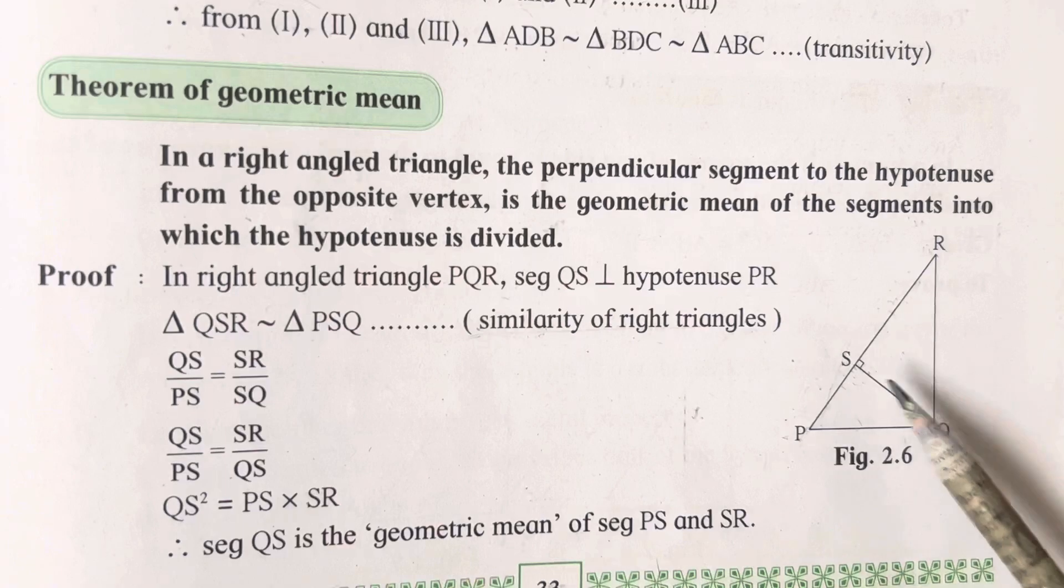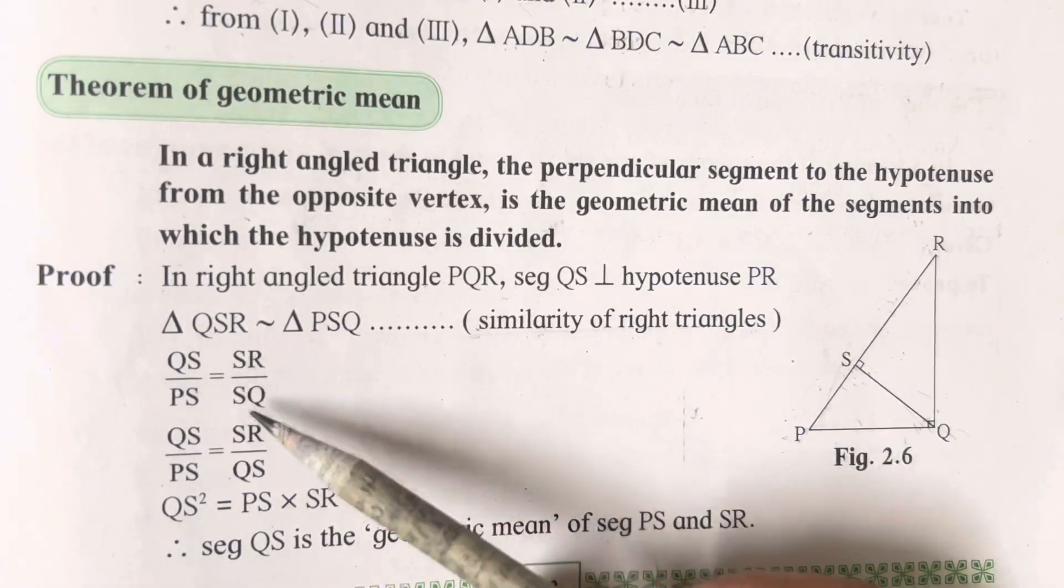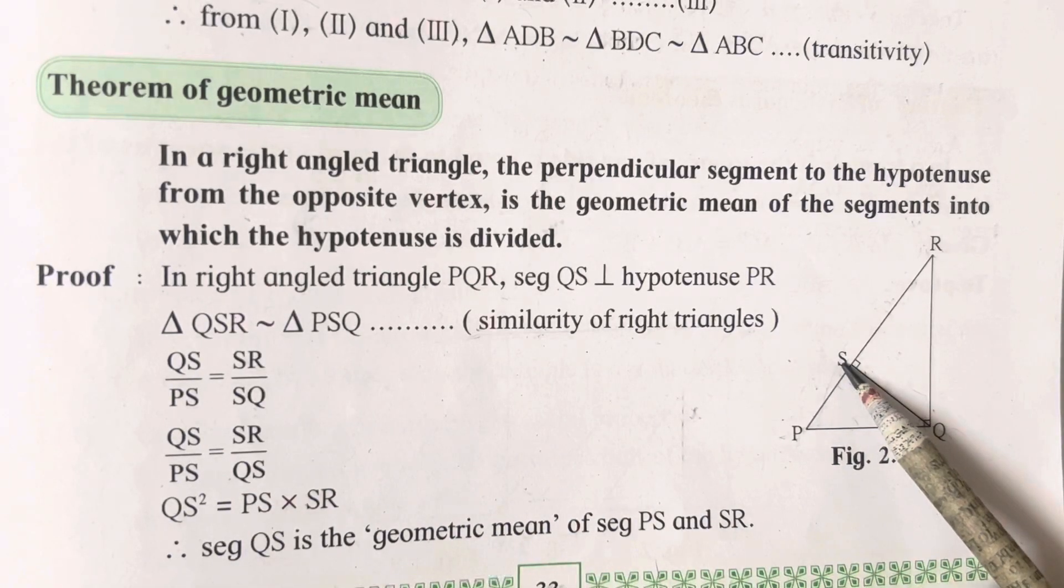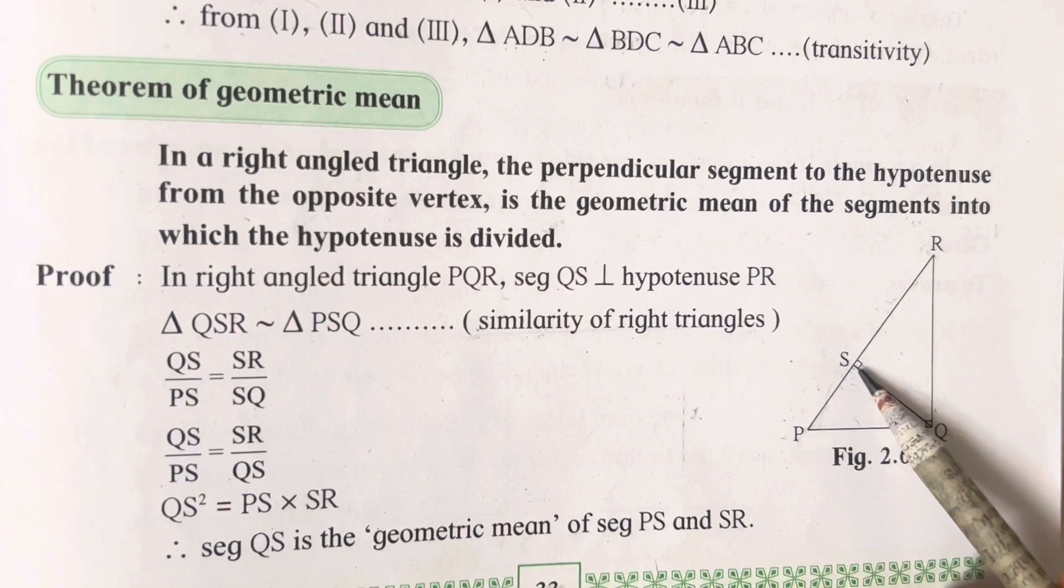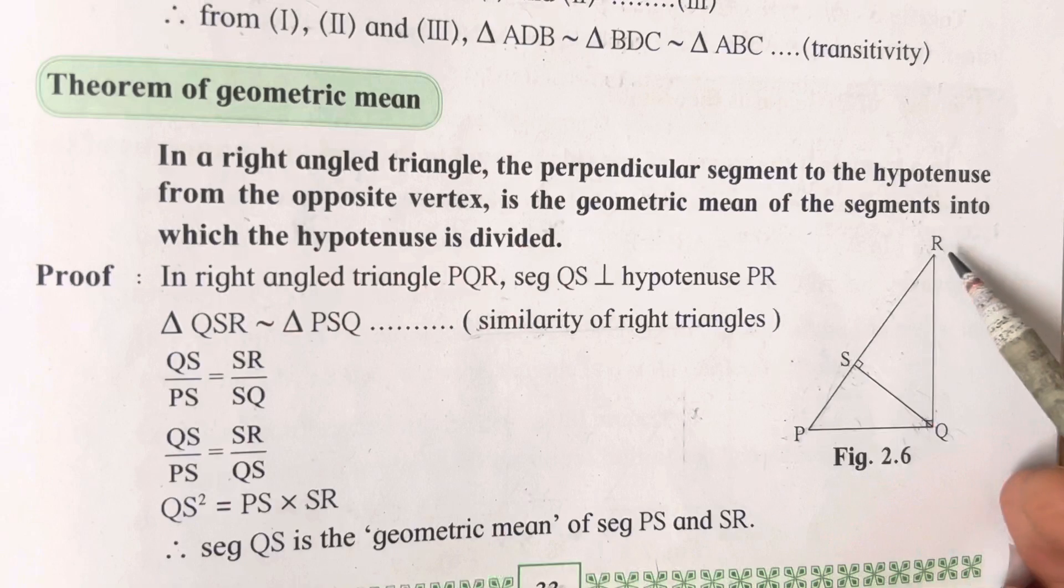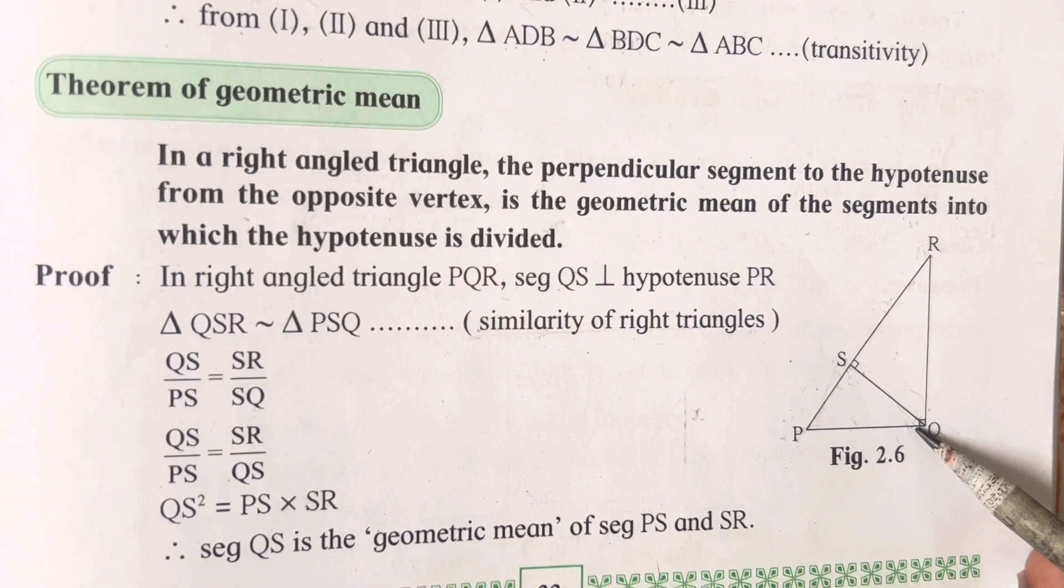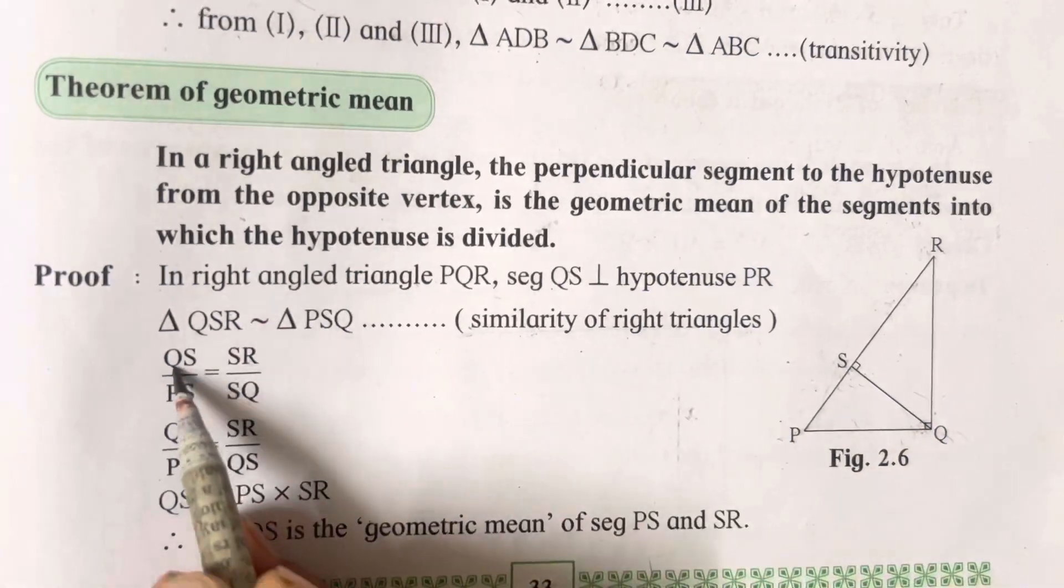Once you have proved that these two triangles are similar—that is QSR and PSR—then you can write the ratio. That is QS upon PS equals SR upon SQ.